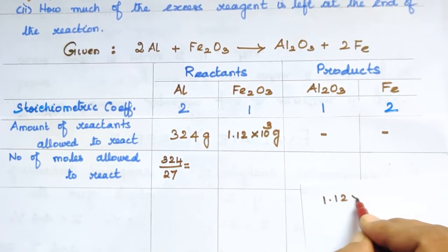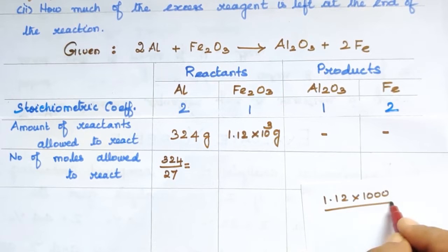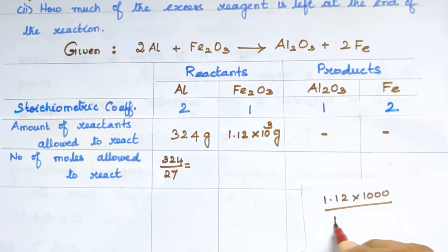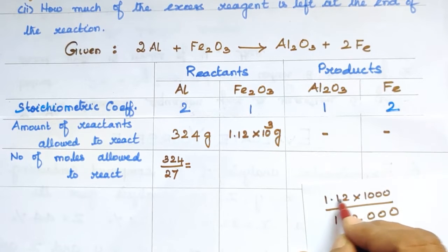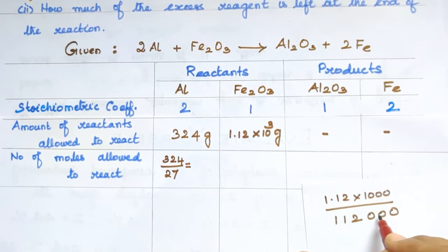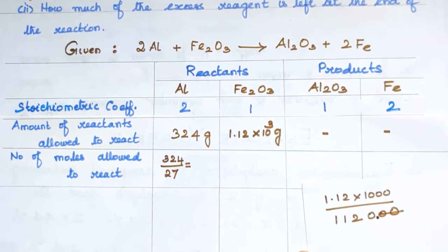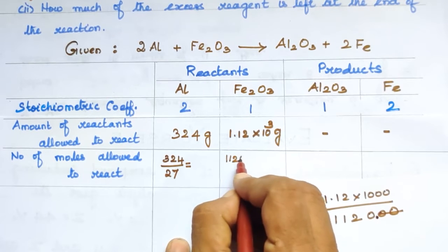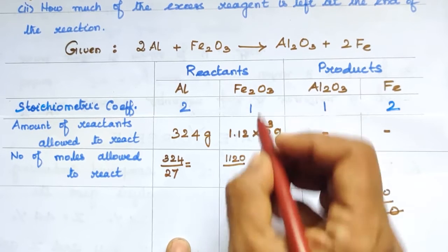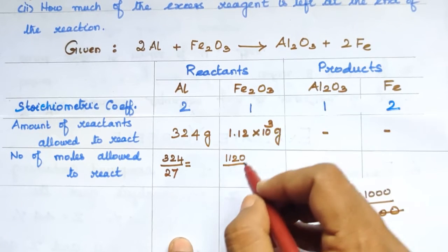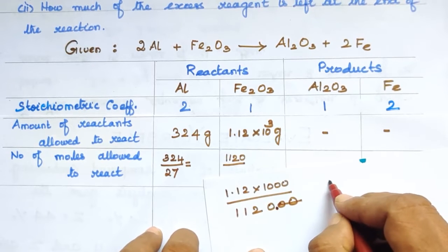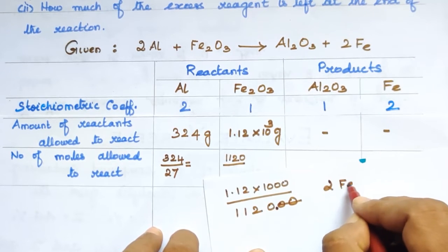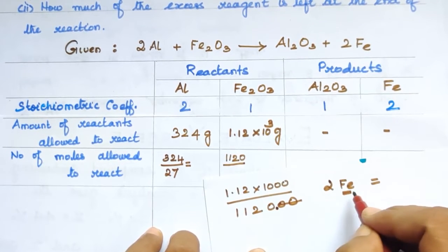For Fe2O3: 1.12 kg equals 1120 grams. The molecular mass of Fe2O3: there are 2 Fe atoms, each 55.85, plus 3 oxygen atoms each 16. That gives us a molecular mass of approximately 160 g/mol. So moles of Fe2O3 = 1120 divided by 160 = 7 moles.